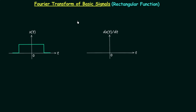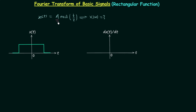In this lecture we will calculate the Fourier transform of the rectangular function, and for this we will consider the general case. The time domain signal x(t) is equal to A rect(T over tau) and we will calculate the Fourier transform X(omega). Here A is the amplitude of the rectangular function and tau is the duration in which the rectangular function has the value equal to A.